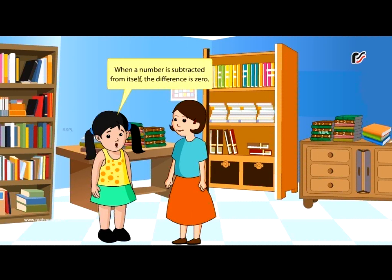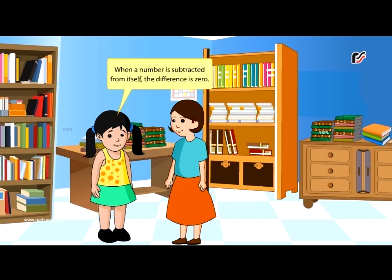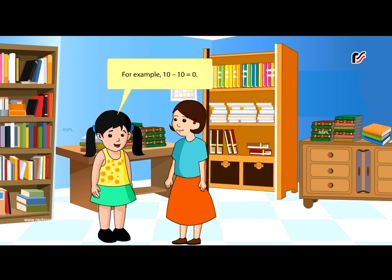When a number is subtracted from itself, the difference is zero. For example, 10 minus 10 is equal to zero.